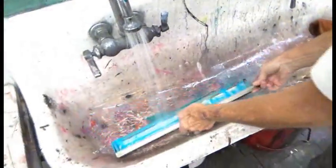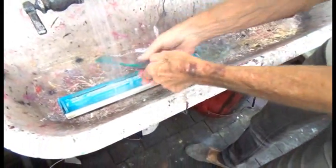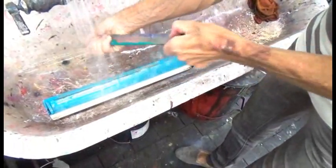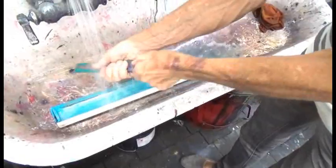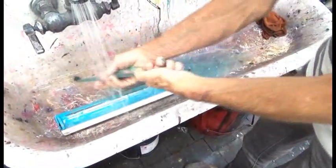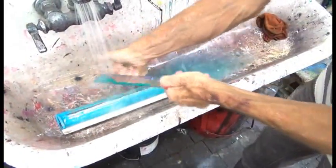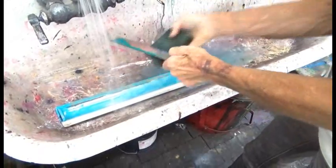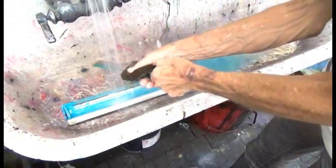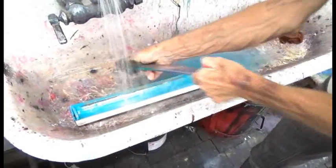I'm washing out my tools. Emulsions are water soluble until they get exposed to light, so as long as we do this fairly quickly during the process, we should be able to get this off pretty easily. This stirring stick was left to dry a little bit, so it's just a little harder to get off, but it's coming.